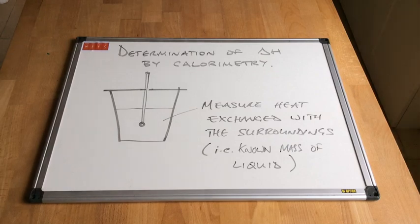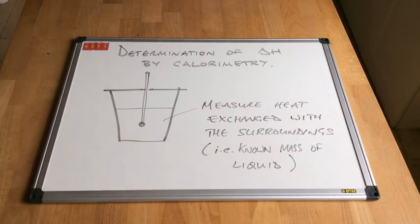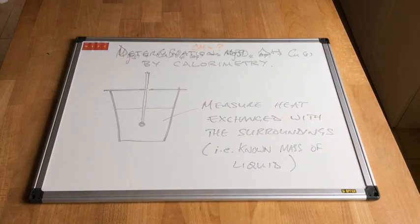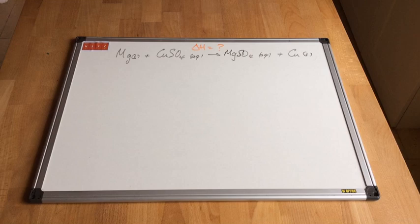Once we've done that we can then convert the energy that's transferred with the surroundings into an enthalpy change. The first example we're going to look at is the reaction between magnesium and copper sulphate solution. It's a displacement reaction and the products are magnesium sulphate solution and copper. We want to know what the enthalpy change is for this reaction.